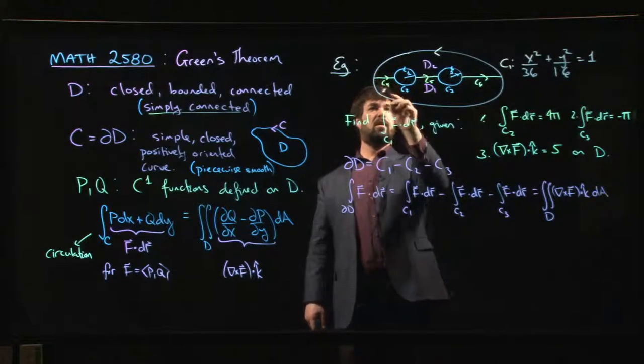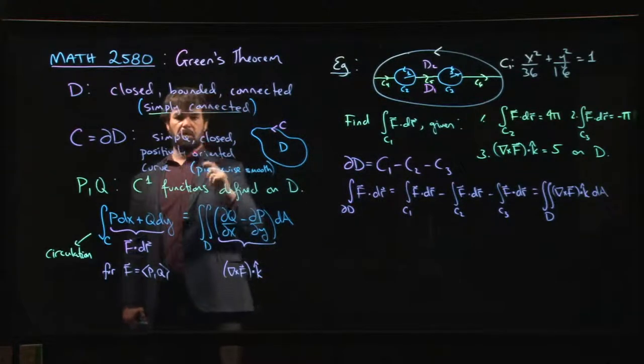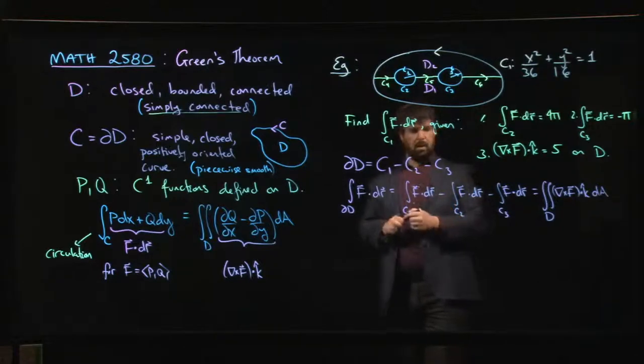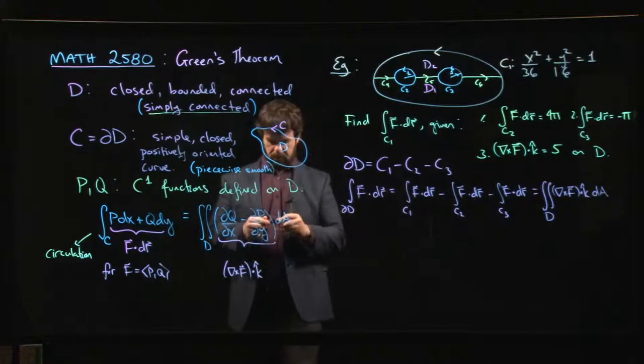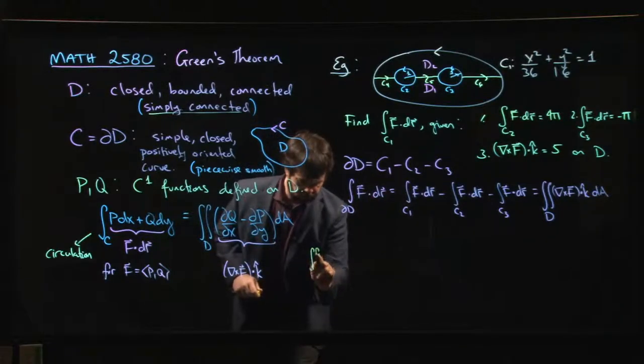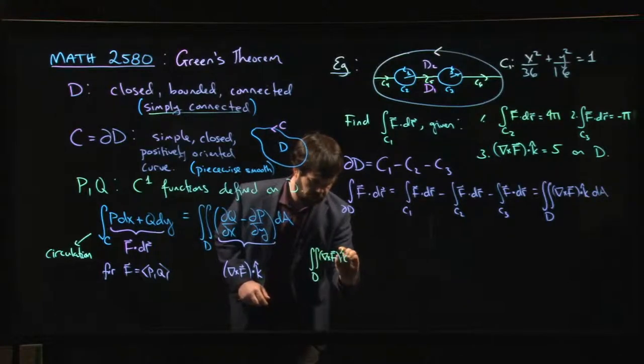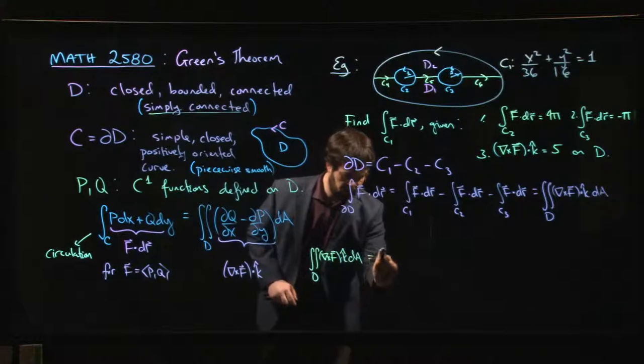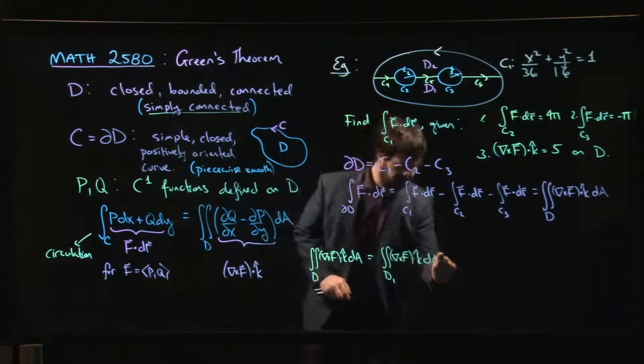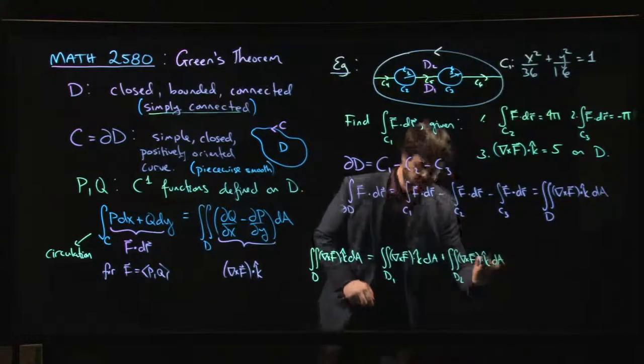We orient the cuts so that, let's say we orient them going that way. One of the things we can do is we can certainly say that Green's theorem applies for D1 and it applies for D2. D1 goes like this, D2 goes like this. Those are both simply connected regions with simple, closed, positively oriented curves for their boundaries. So let's check. Does it all work out?